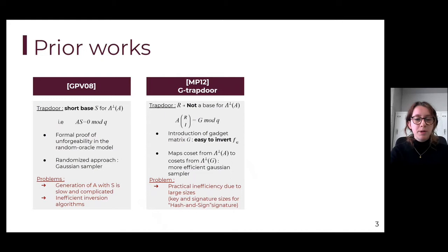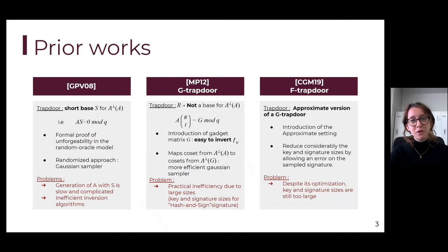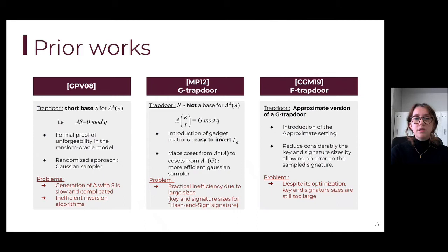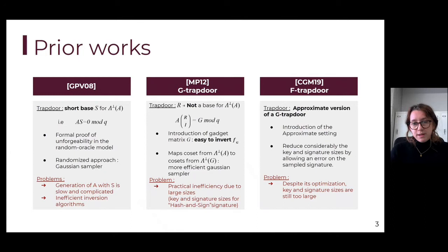In order to optimize further, in 2019 the F-trapdoor construction was published. The F-trapdoor construction is about an approximate version of the G-trapdoor construction. It introduced the approximate setting, and by allowing an error on the sampled pre-image, it was able to reduce the public key and signature sizes in the hash-and-sign signature. Despite this optimization, the key and signature sizes are still too large.